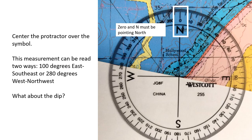Center the protractor over the strike and dip symbol. The crossed lines on the protractor should lay over the intersection of the dip line with the strike line. The 0 and N must be pointing to the top of the map, north. The east-west line on the protractor should be parallel to the top edge of the map. The measurement can then be read two ways: 100 degrees east-southeast, or 280 degrees west-northwest.